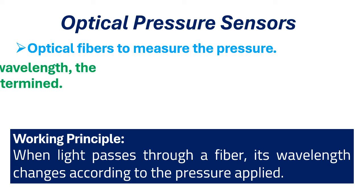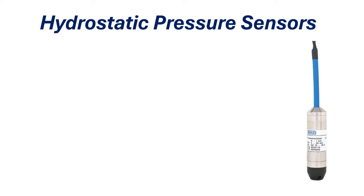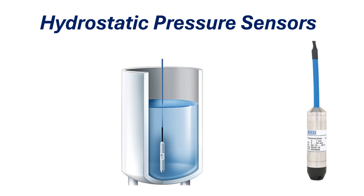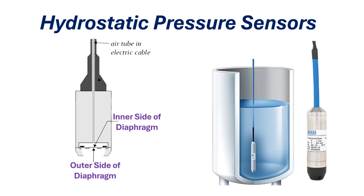By measuring the change in wavelength, the pressure can be accurately determined. This is the basic working principle of an optical pressure sensor. Fifth is the hydrostatic pressure transmitter. The hydrostatic pressure transmitter is a submersible pressure sensor that measures the pressure at the bottom of a tank or reservoir.